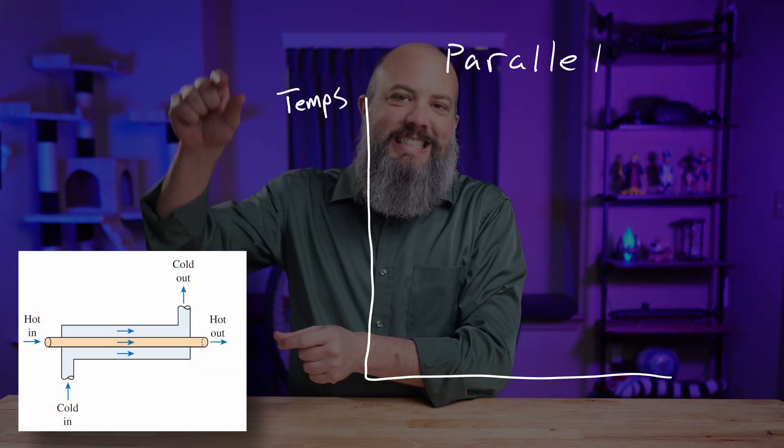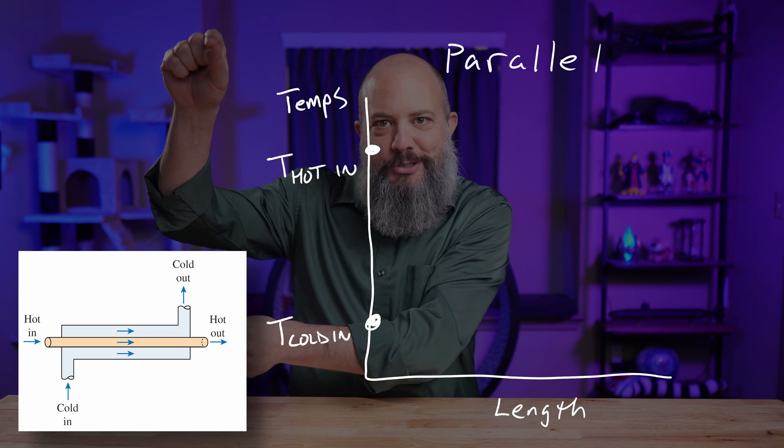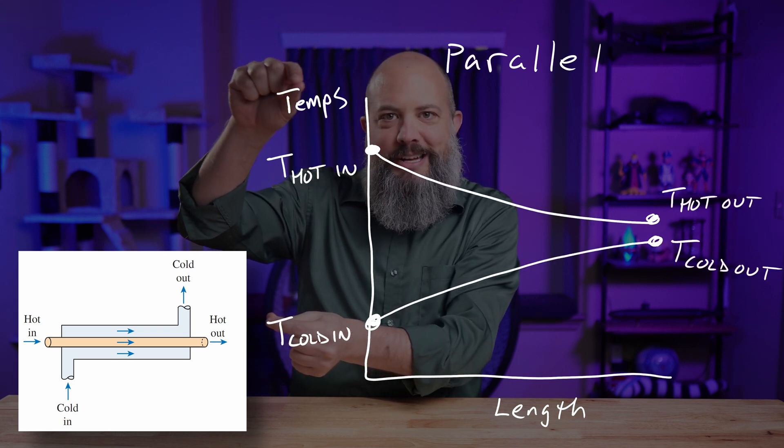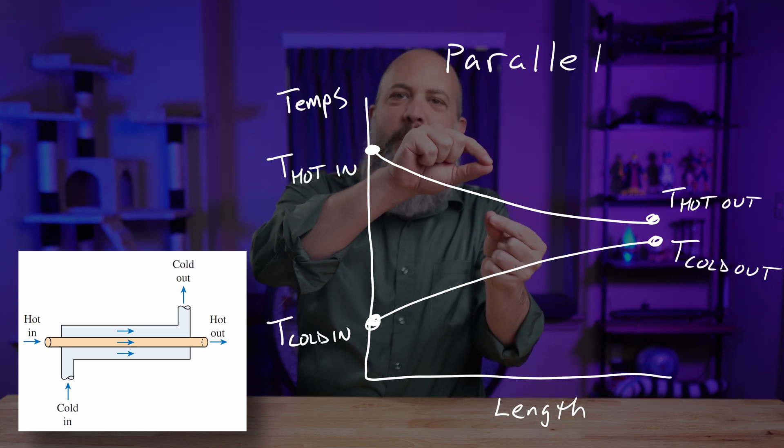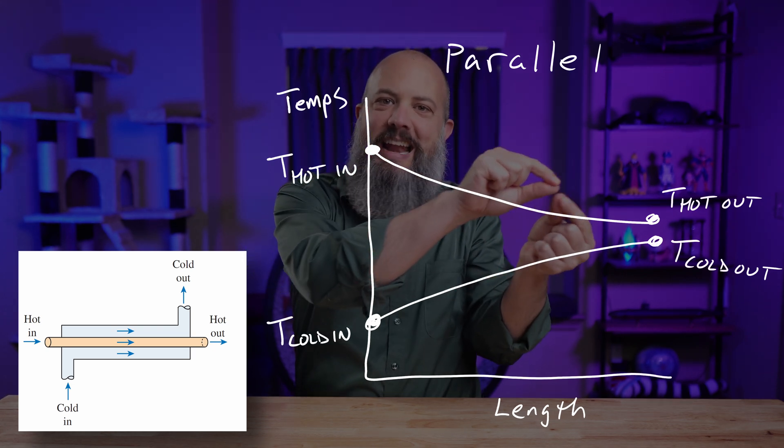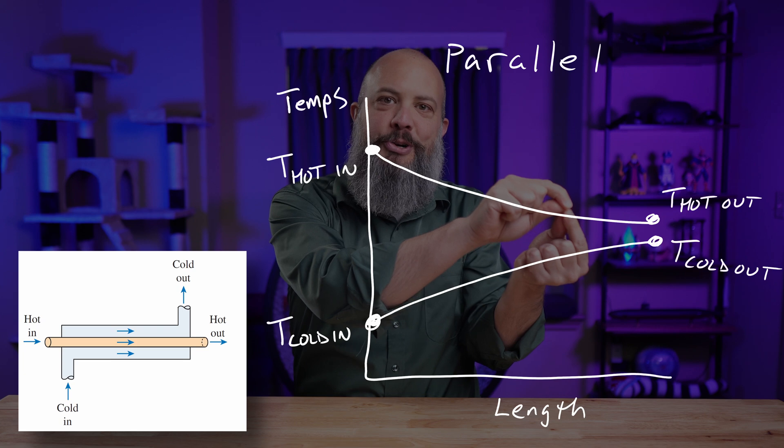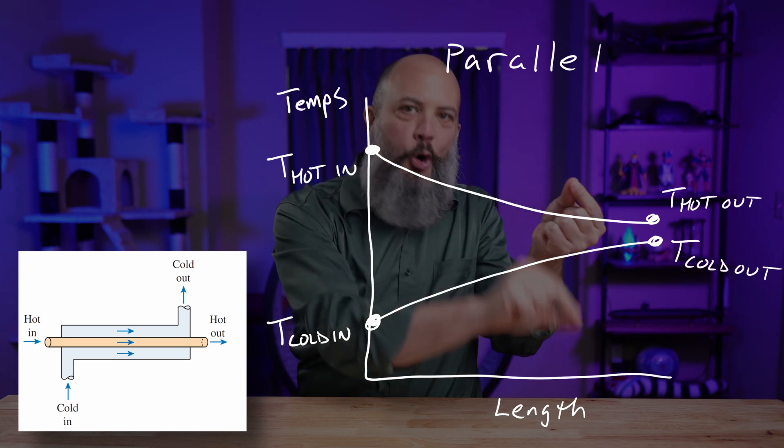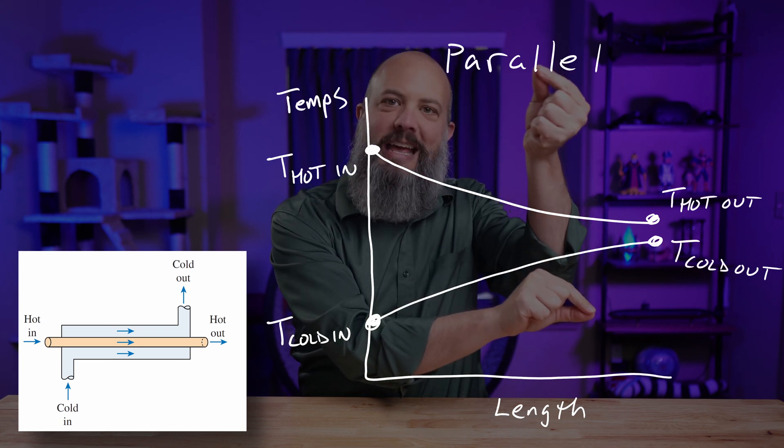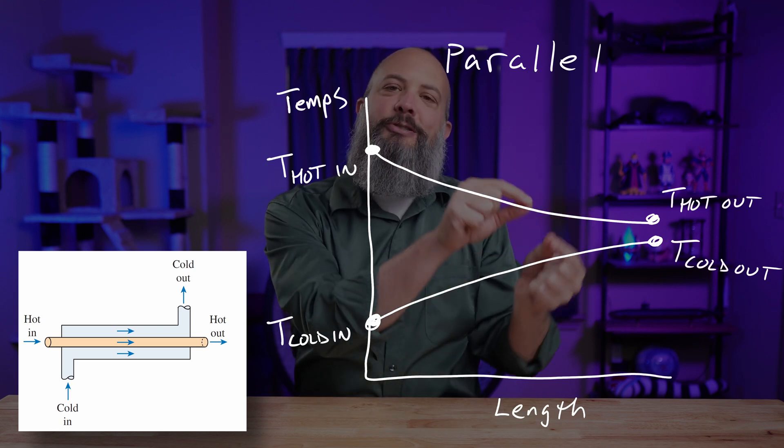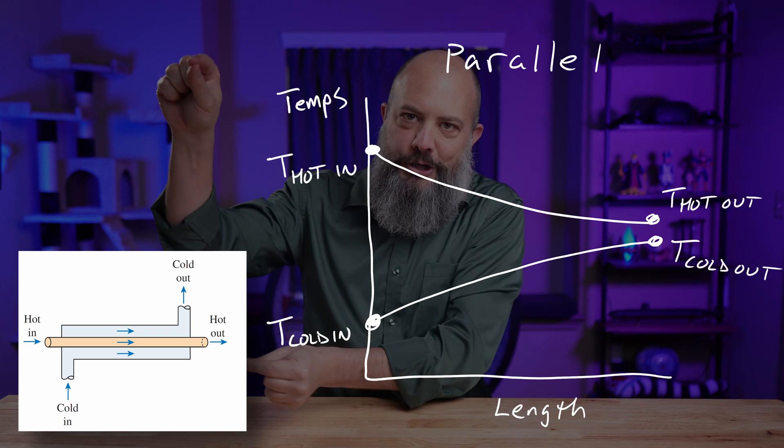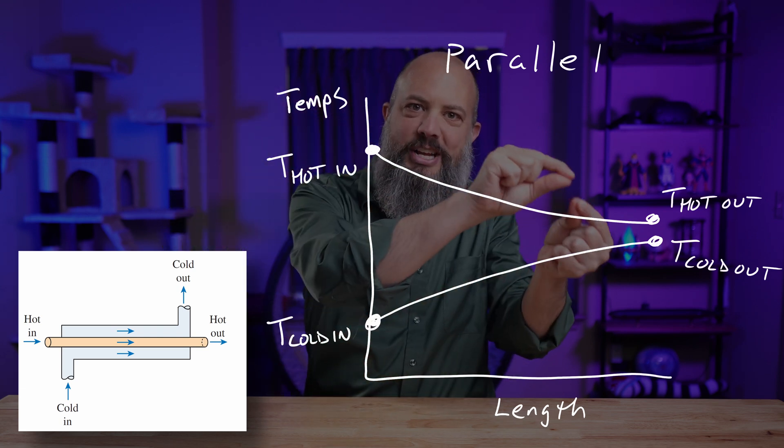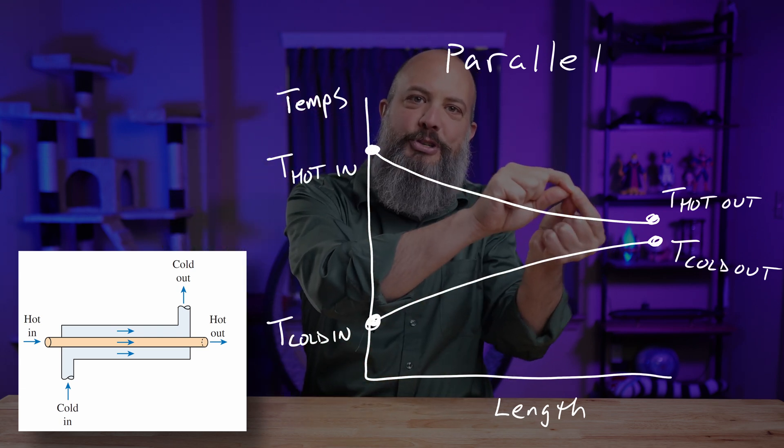In parallel flow, the steam enters really hot, water enters really cold. And as they go through the heat exchanger, the steam gets colder, the water gets warmer, and the best possible end state has them at the same temperature. The steam can never get colder than the water and the water can never get hotter than the steam. And so there's sort of a limited upside to how good a parallel flow heat exchanger can be because those exit temperatures can never cross.